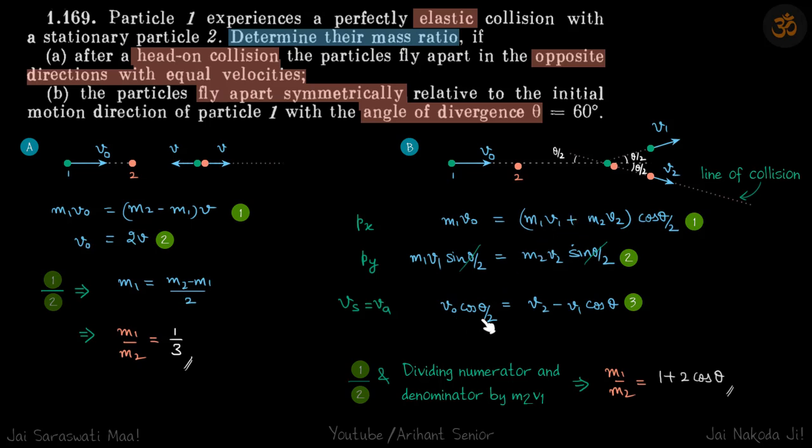You will also be left with velocities. You can see here m1/m2 = v2/v1. After dividing equations 1 and 2, if you divide the numerator and denominator again by m2·v1, you will see it's a simple calculation and the result will be 1 + 2cosθ.